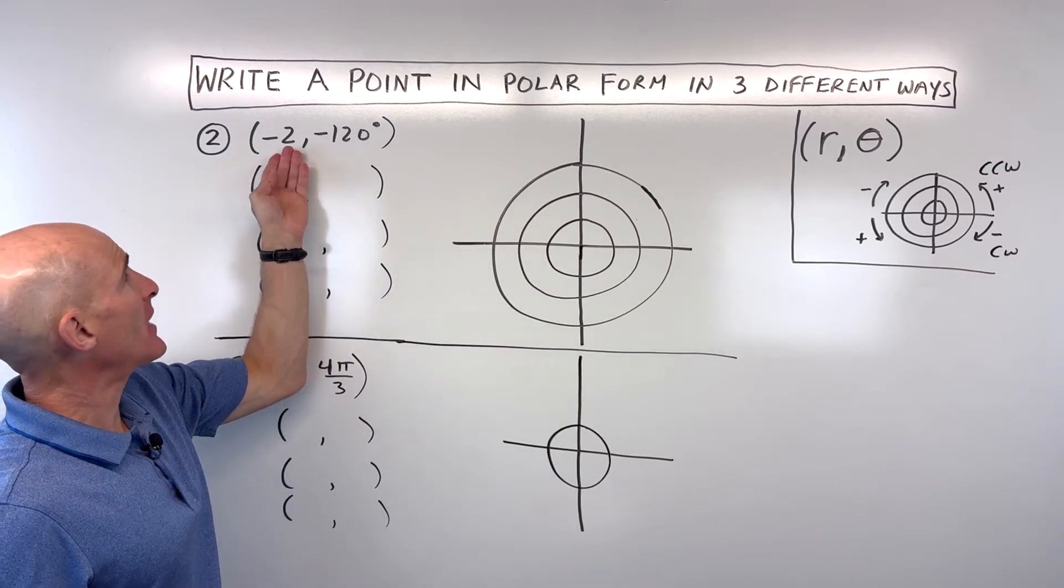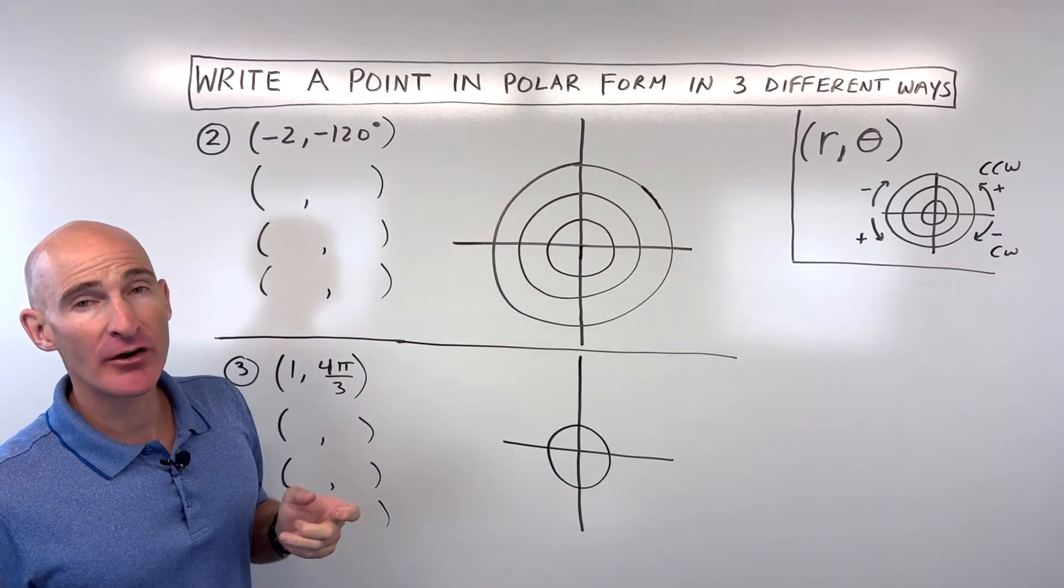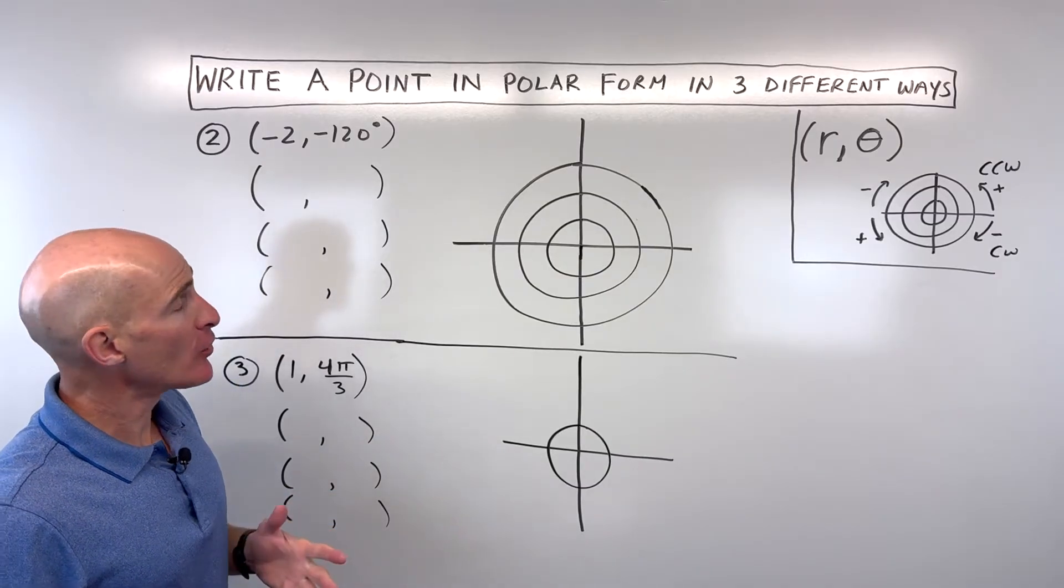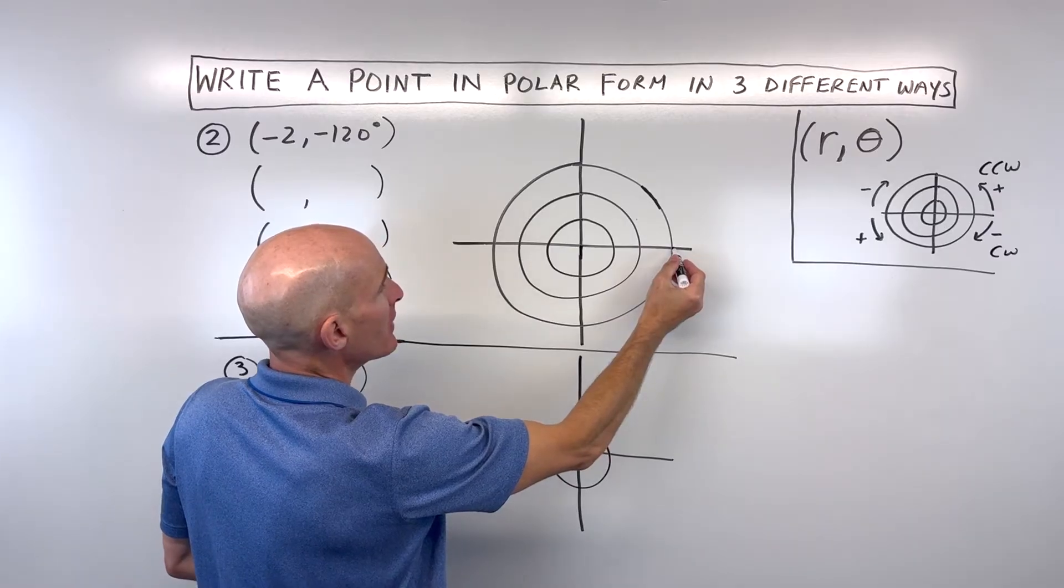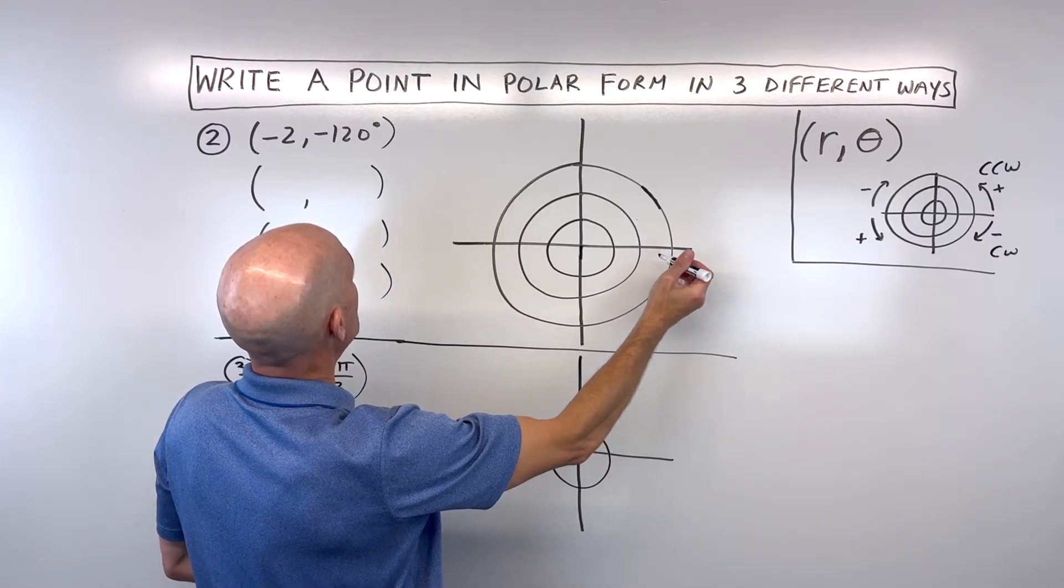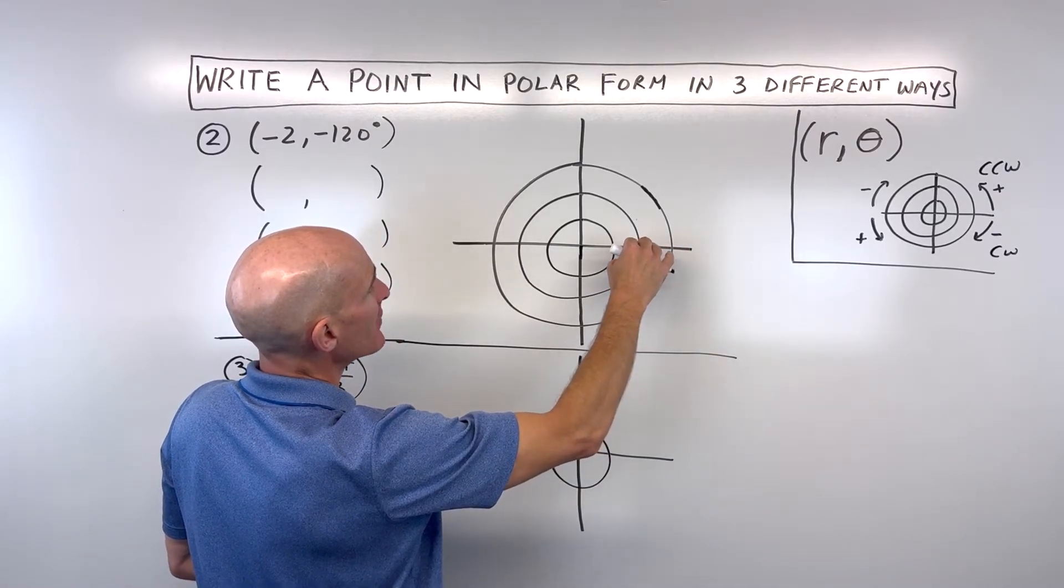We're starting with this point at negative two, negative 120 degrees. Another way to look at this is you could start with the angle. I'm going to rotate negative 120 degrees.